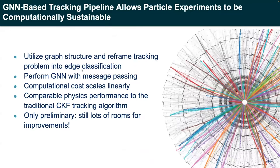In summary, the GNN-based track finding utilizes the graph structure of each collision event and reframes the tracking problem into edge classification, which is performed through message passing. This allows particle experiments to be computationally sustainable, where computational cost scales linearly, while physics performance is retained. As the results are still preliminary, there is still a lot of room for improvement, both physics-wise and computation-wise. Stay tuned — thank you!